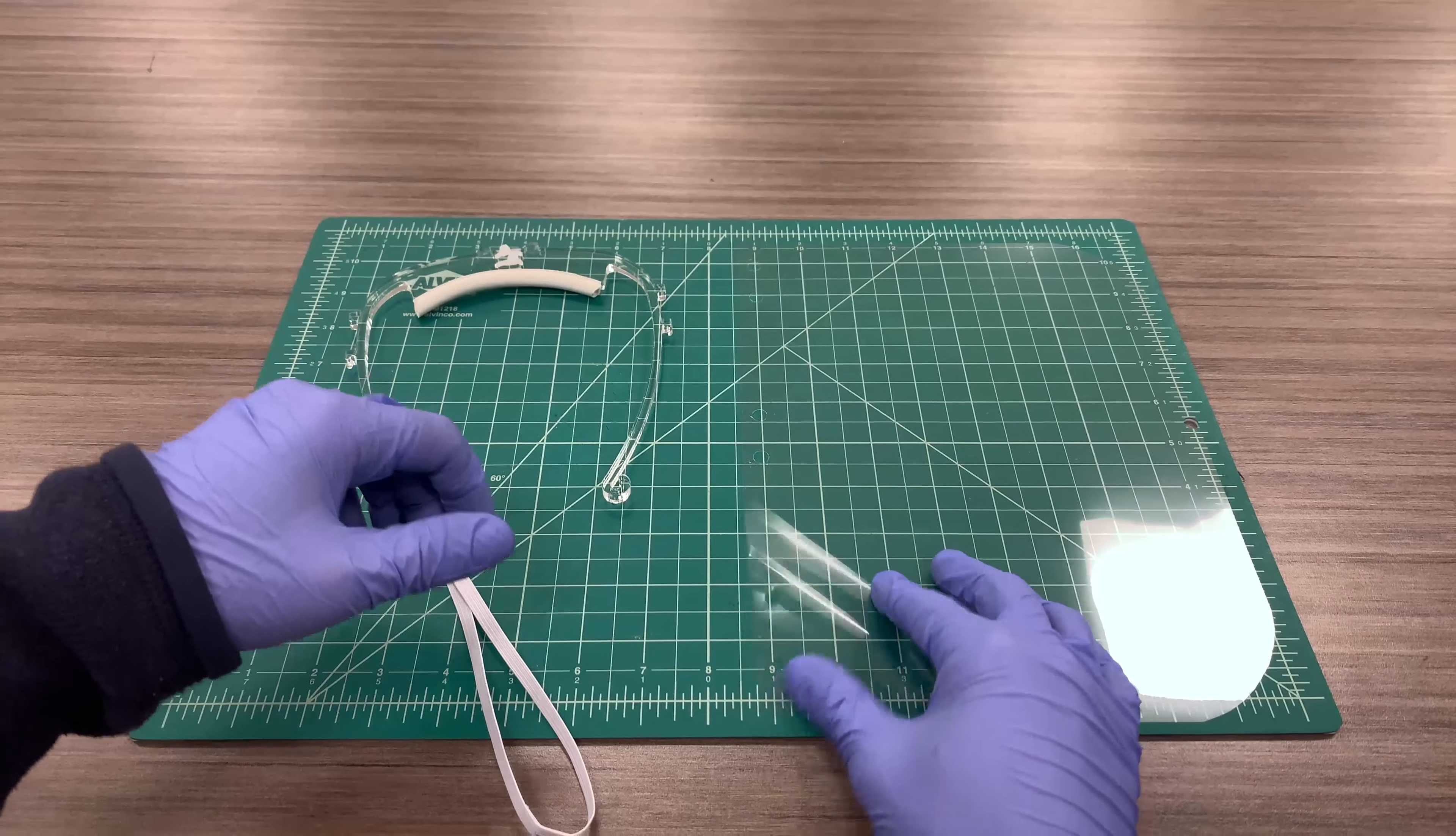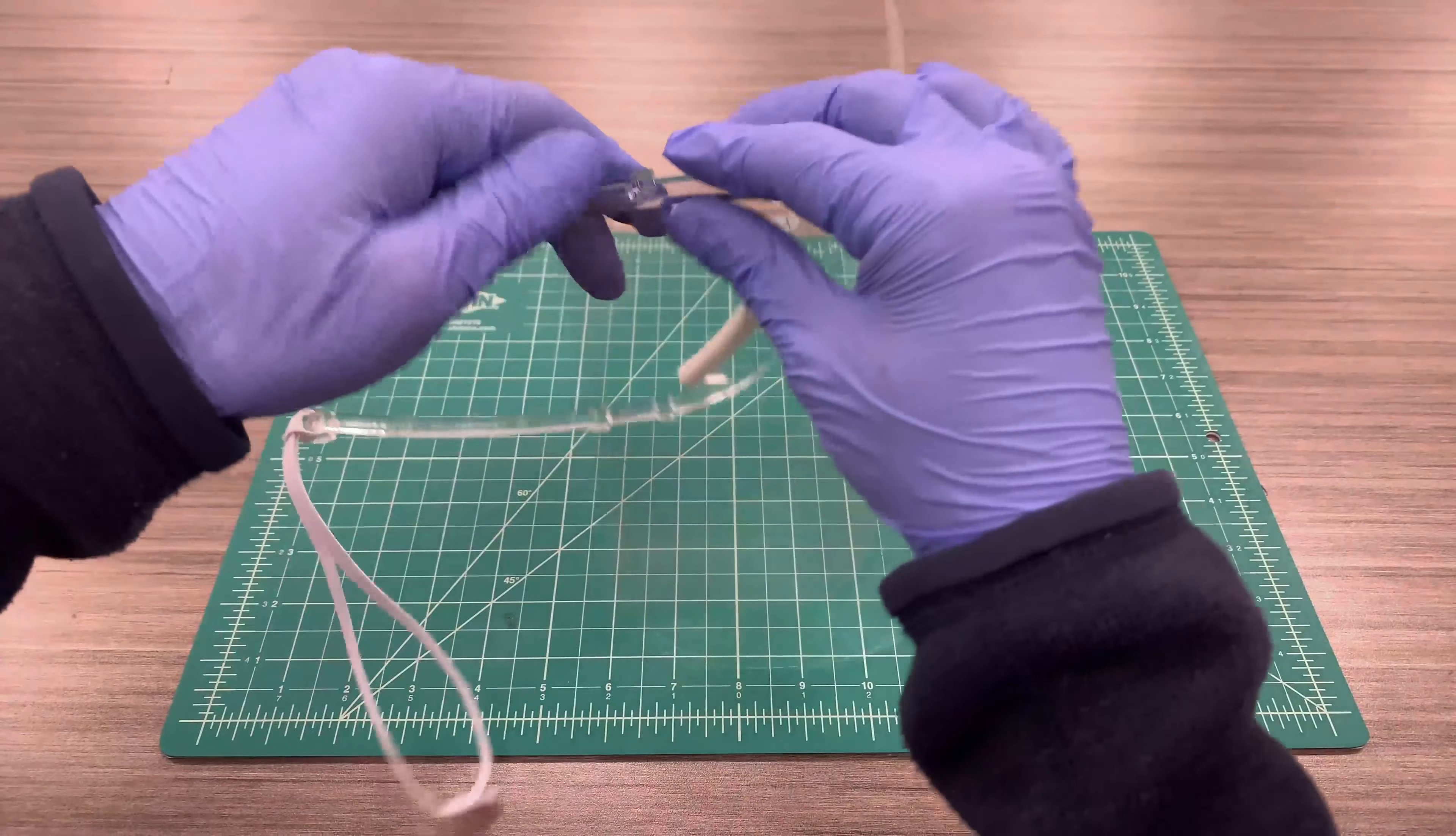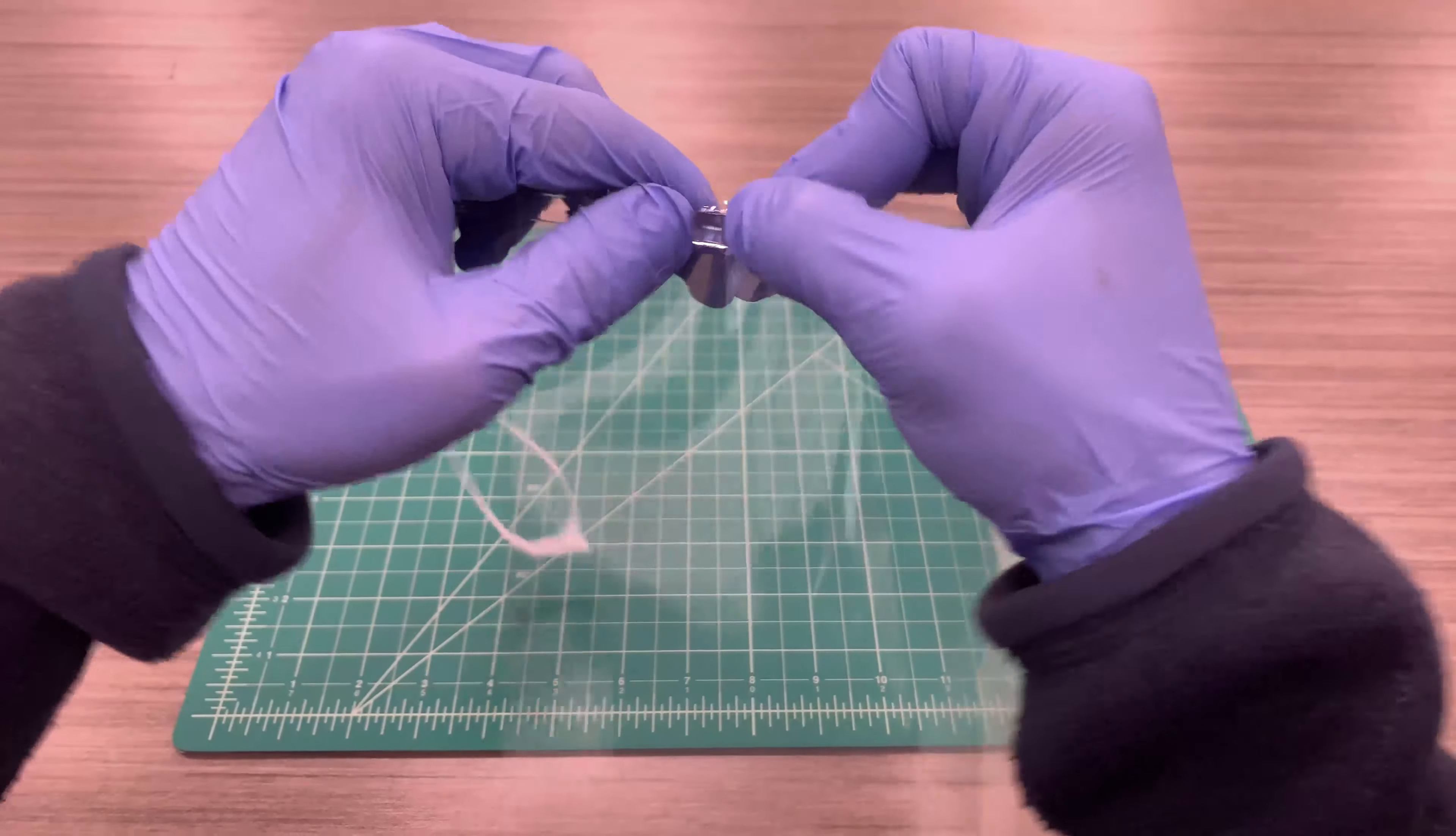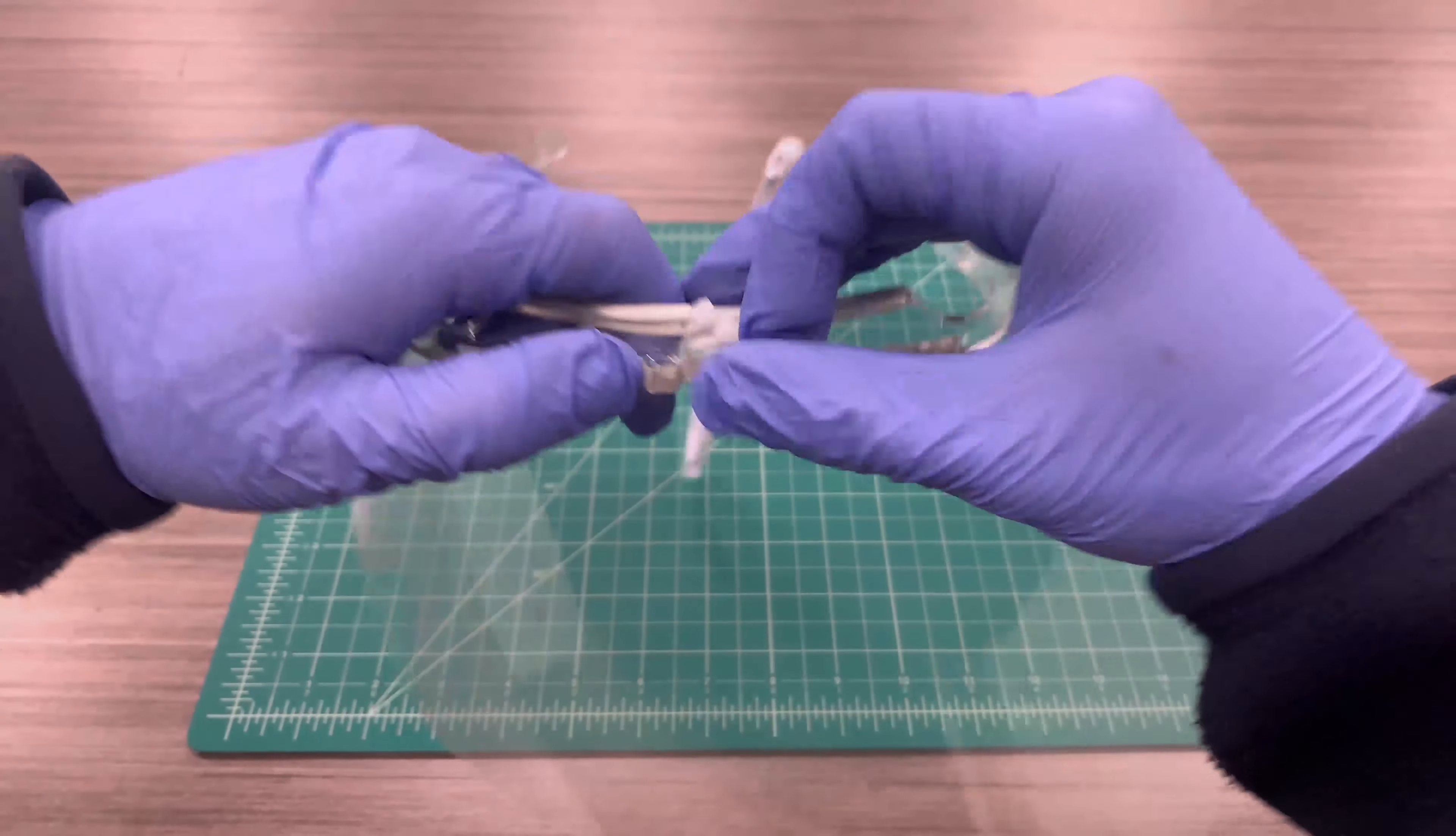All right, now, and finally, we're going to attach the shield to the visor. So you want to start at the end, put it through the first hole, and you just want to walk it along, pressing it through as you get to each corresponding hole.